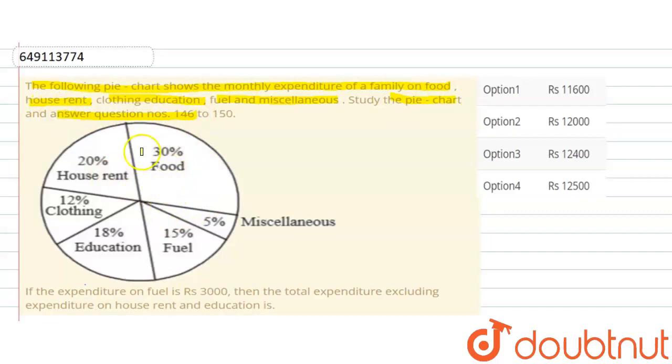Simply, the pie chart is given with different types of expenditure shown in percentages. Now, our question is: If the expenditure on fuel is Rs. 3000, then the total expenditure excluding expenditure on house rent and education is?